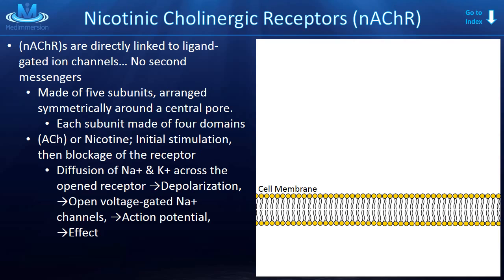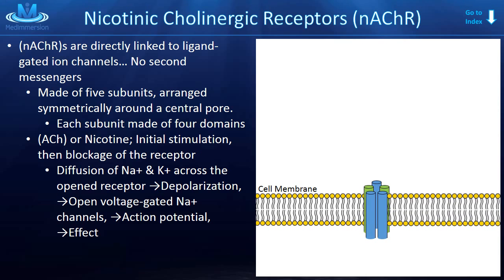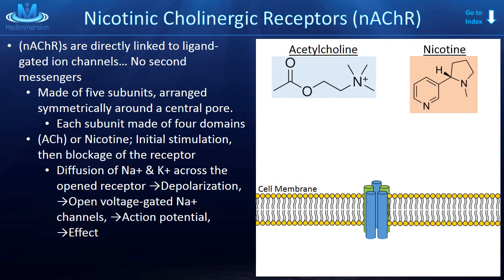Let's talk about the nicotinic cholinergic receptors first, abbreviated ACHR with an N in front to denote nicotine. These receptors are directly linked to ion-gated channels — there is no second messenger system. The receptor is a physical part of the ion channel. These ion channels are made of five subunits arranged symmetrically around a central pore through which ions travel when opened. When stimulated by acetylcholine or nicotine, there is an initial stimulation and opening, followed by a blockage or refractory period. This is important because it relates to how some drugs work.